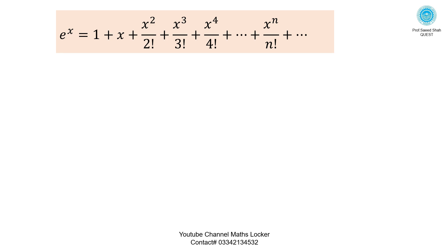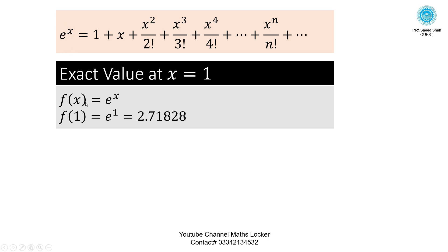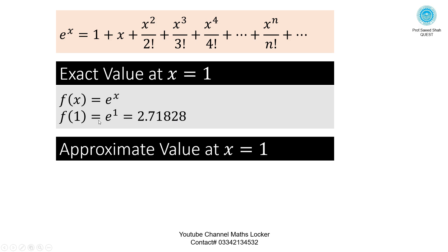...written in the form of the Taylor series expansion on the right-hand side. Exact value at x = 1: let f(x) = e^x, put x = 1, then we get e^1, which equals 2.71828.